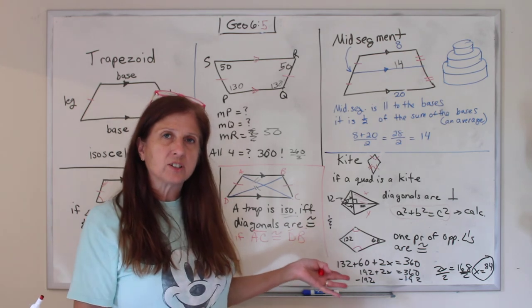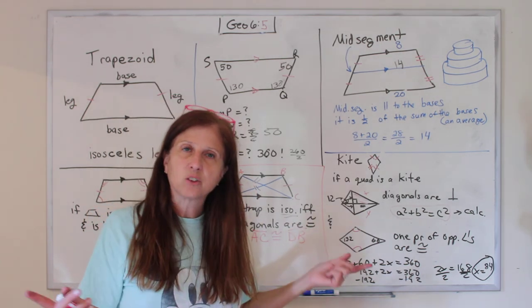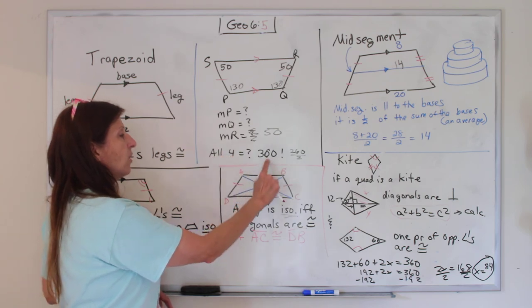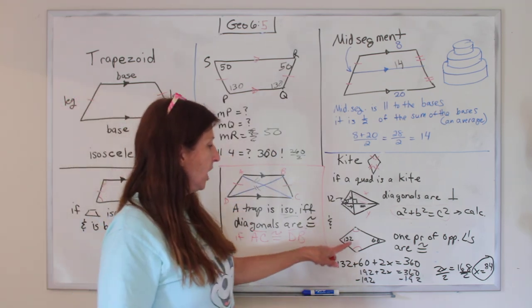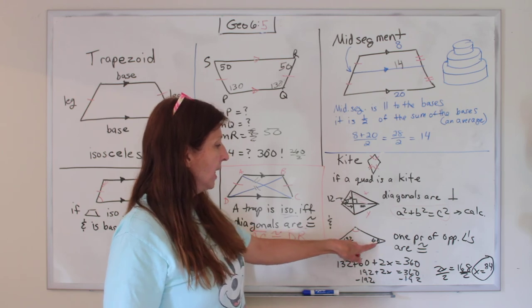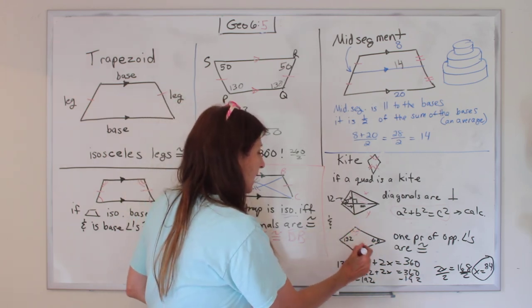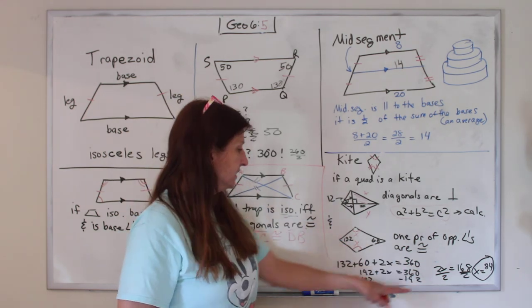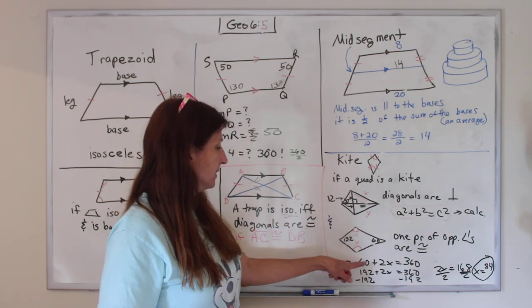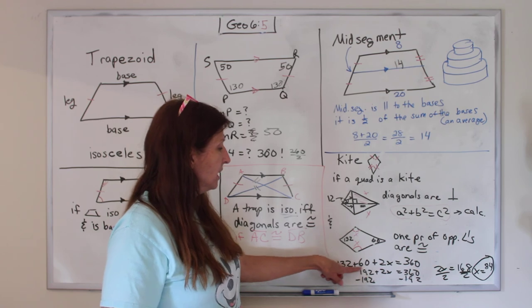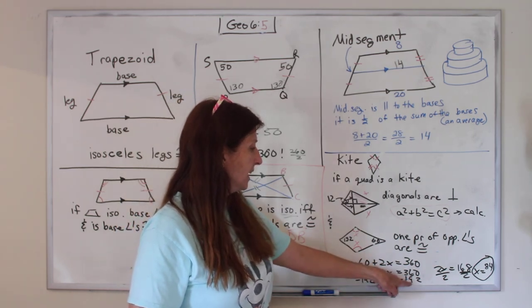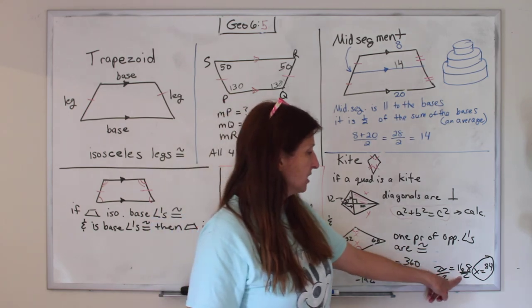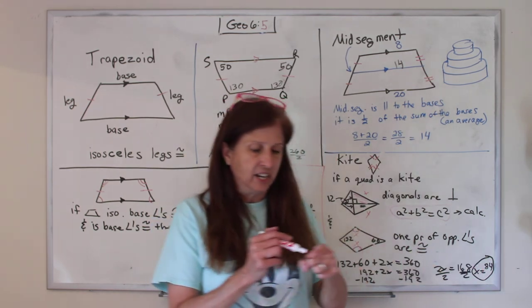Well, what are those two? Can we figure it out? Yes, we can, because all four angles of a quadrilateral are 360. So we know 132 plus 60 plus x plus x, which is 2x, equals 360. 132 and 60 is 192. Subtract 192 from both sides, and you get 2x equals 168. Divide both sides by 2, and x is 84.